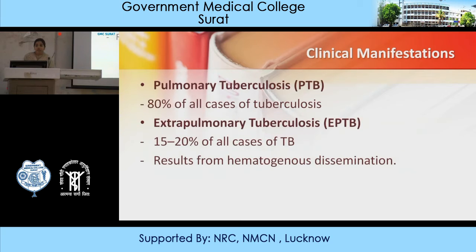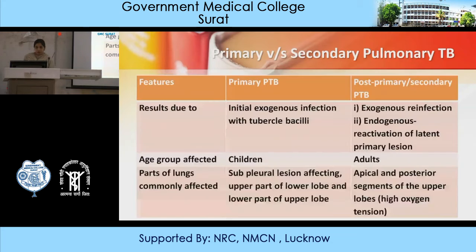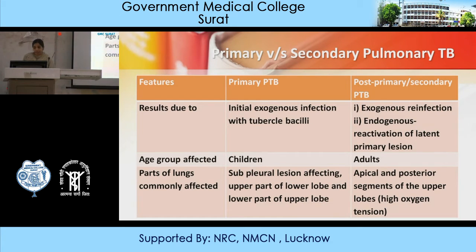Clinical features of M. tuberculosis: one is pulmonary tuberculosis (PTB) and second is extra-pulmonary tuberculosis. Pulmonary tuberculosis accounts for 80% of all cases. Extra-pulmonary tuberculosis accounts for 15 to 20% of all cases, resulting from hematogenous dissemination. Primary tuberculosis involves initial exogenous infection. Post-primary or secondary PTB is due to exogenous reinfection or endogenous reactivation of latent primary lesions.